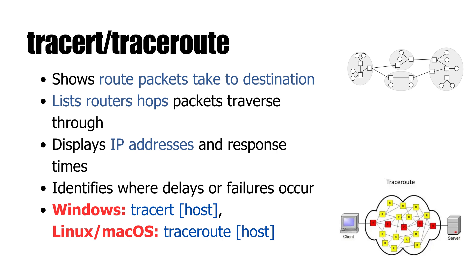Why is this useful? Well, sometimes you can ping a website, but you're still dealing with slow speeds or random timeouts. That's where traceroute shines. It helps pinpoint where the problem is happening. Is the slowdown inside your ISP's network or is it further downstream, closer to the destination server? With traceroute, you can see exactly where the connection is breaking down, so you know where to focus your troubleshooting.